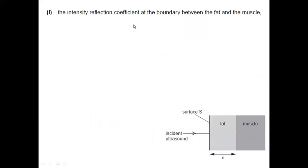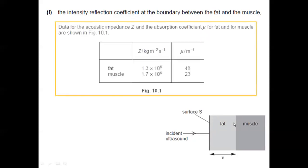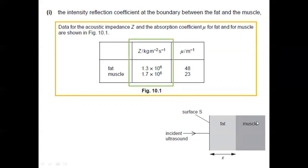For our first question, we are asked for the intensity reflection coefficient at the boundary. The intensity reflection coefficient tells us how much of the intensity of the ultrasound reaching this boundary will get reflected. To solve that, we need the data for the acoustic impedance of the two materials involved, and once we have these values, we can simply use the formula for the intensity reflection coefficient.